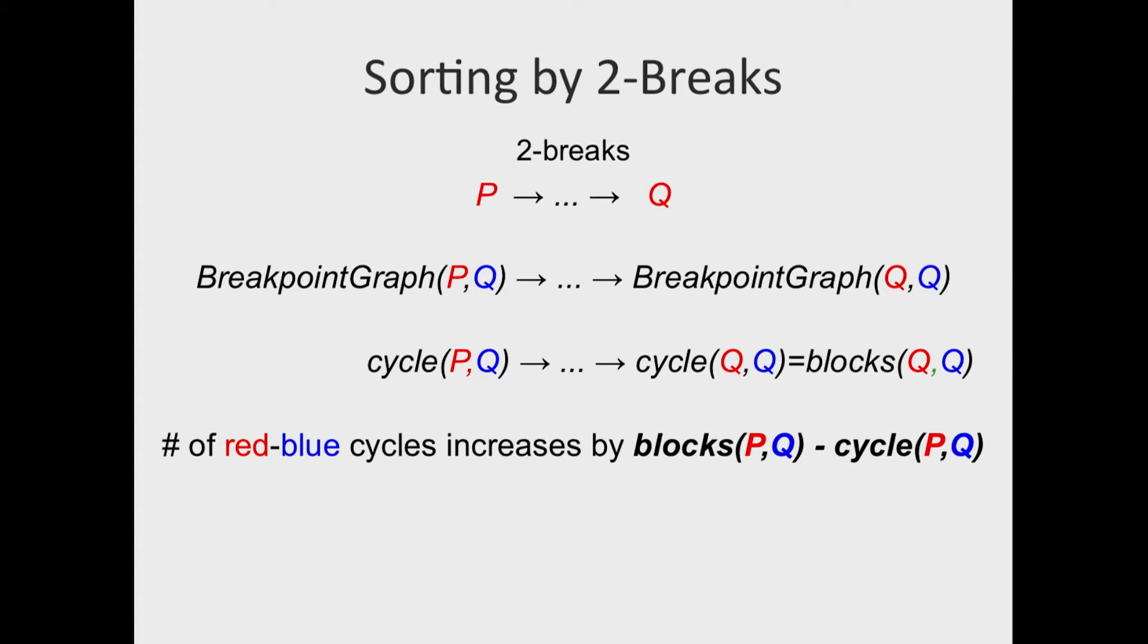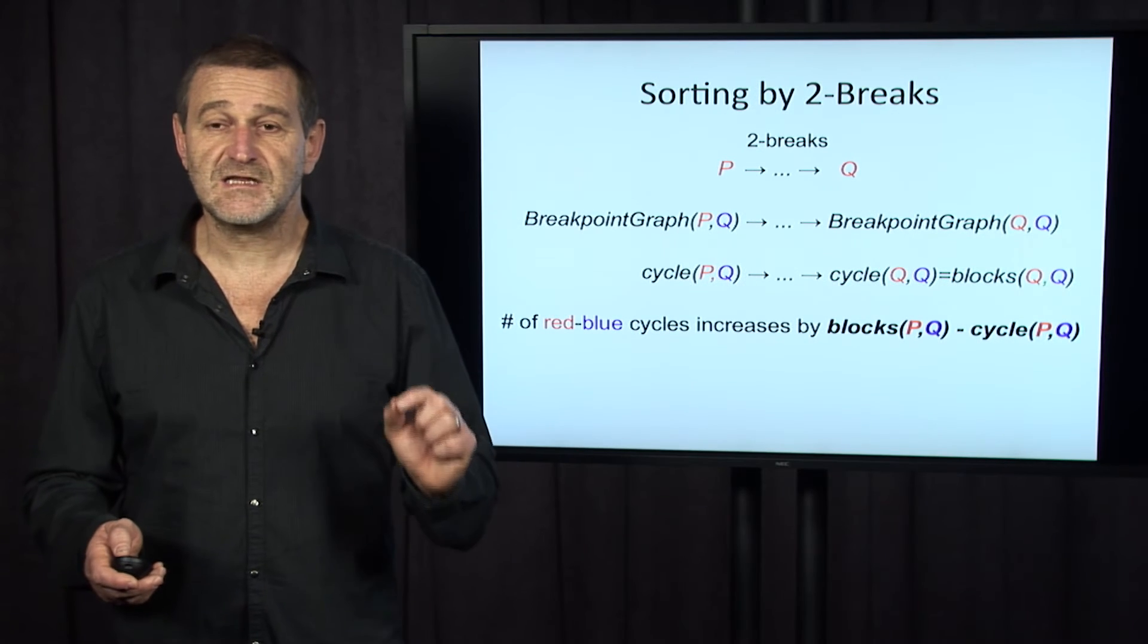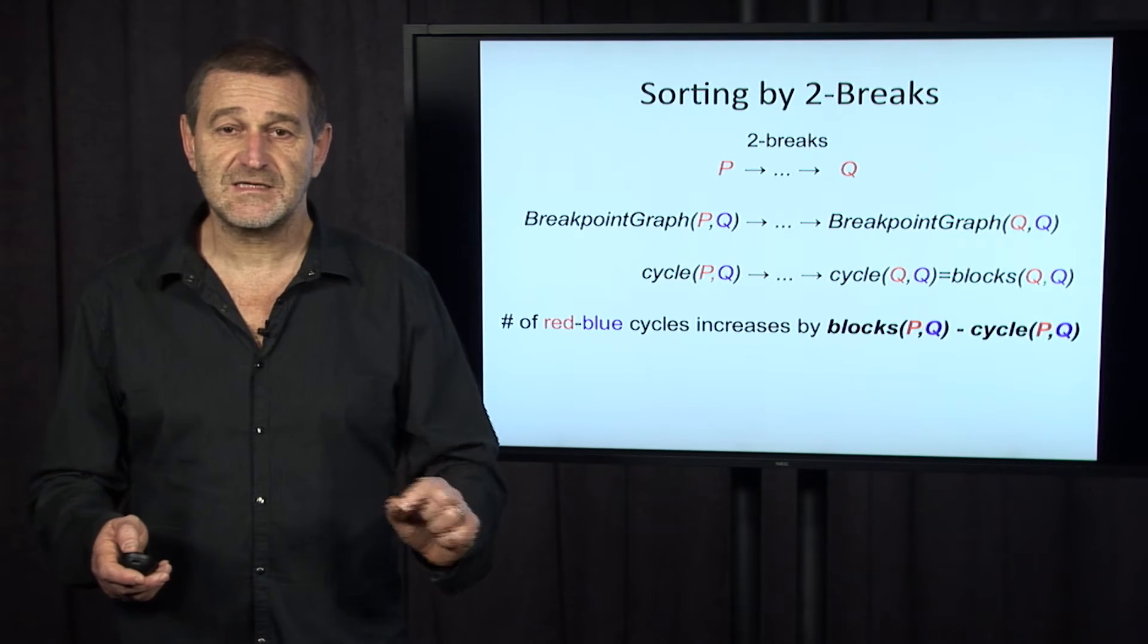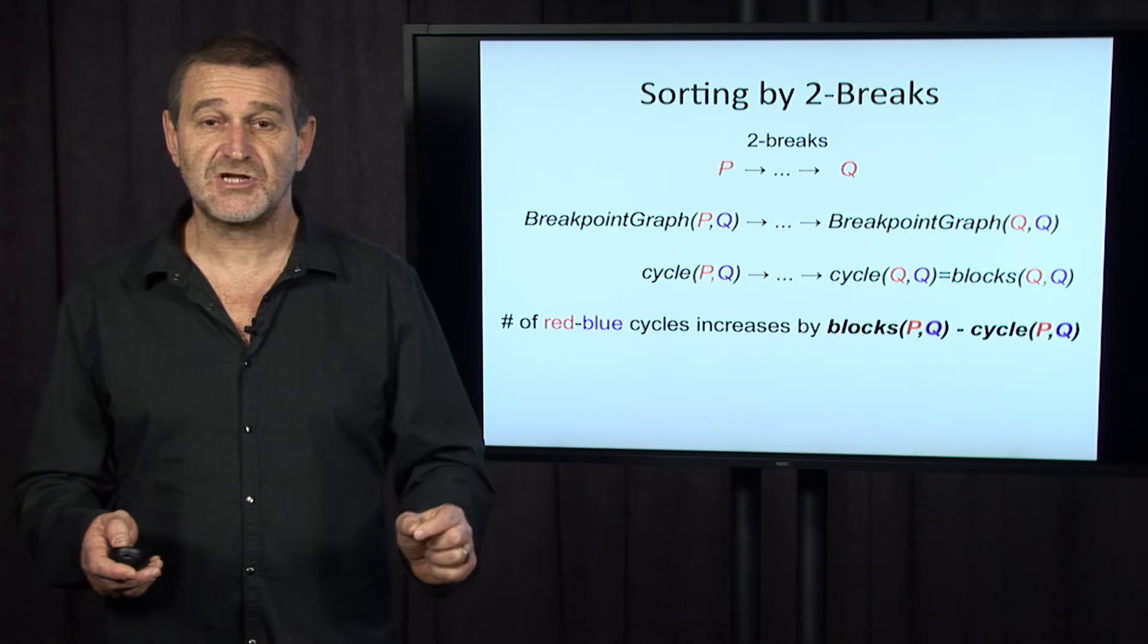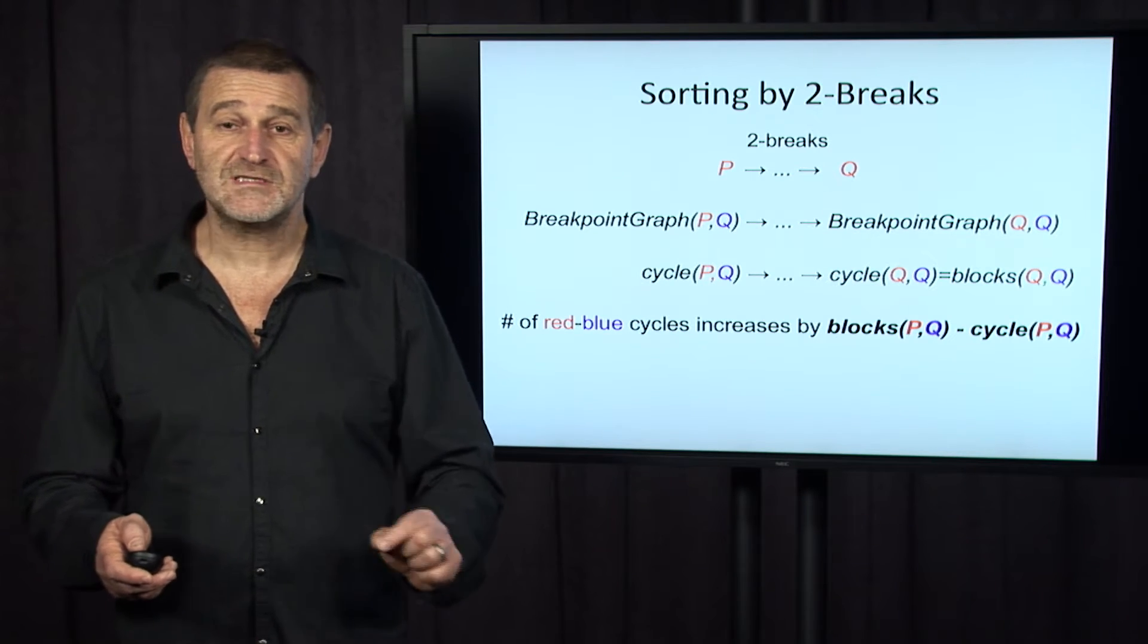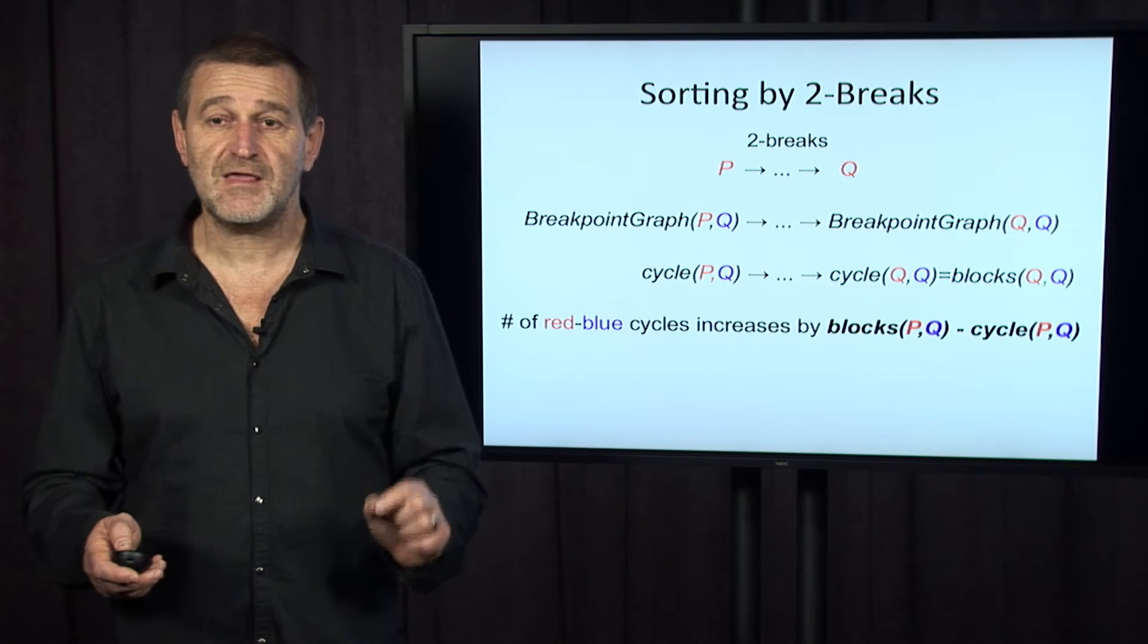Therefore, whatever transformation of P and Q accomplishes it, the number of red-blue cycles increases by number of blocks in the genomes P and Q, minus number of cycles between P and Q.